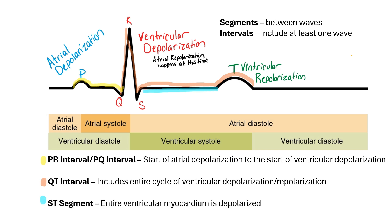The ST segment does not include waves — it is between the S and the T. That's the time the entire myocardium is depolarized: it starts at the end of when it finished depolarizing and ends before it starts to repolarize. These different intervals and segments can indicate different disease processes. A prolonged PR interval could indicate a first-degree heart block — an issue of conduction where the electrical signal between the atria and ventricles is getting slowed down.